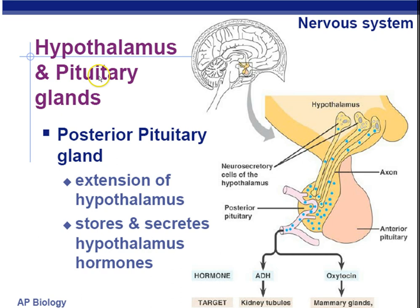The hypothalamus has neuron connections directly to the posterior pituitary — they're linked not by chemical signals but by the nervous system. The posterior pituitary releases two hormones. The first is ADH, or anti-diuretic hormone, which makes the collecting ducts of the kidney more permeable to water so you reabsorb more water into the body. The target for ADH is the kidney tubules or collecting ducts, to conserve water.